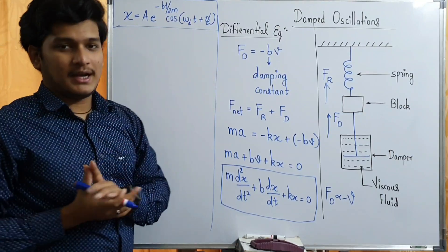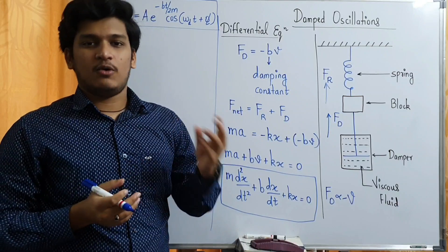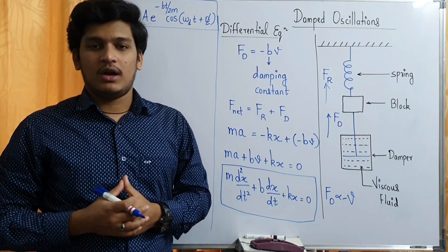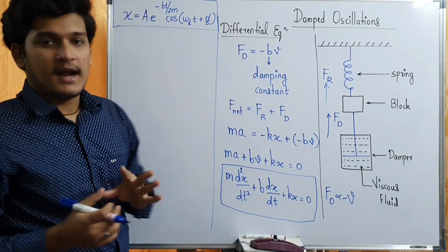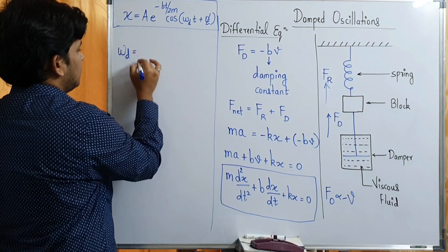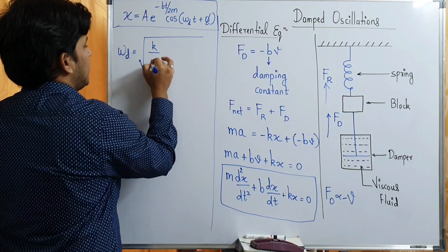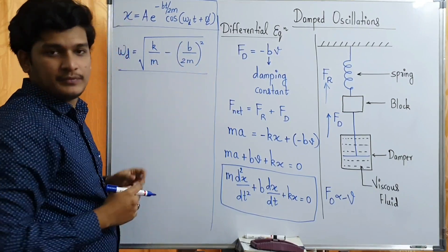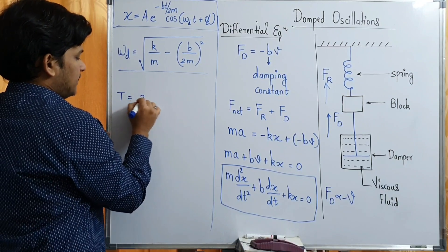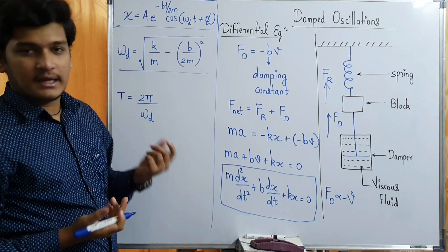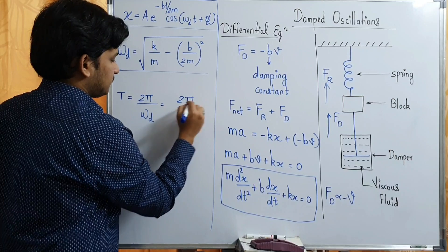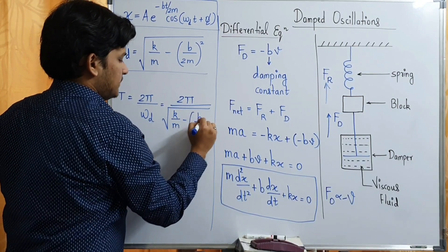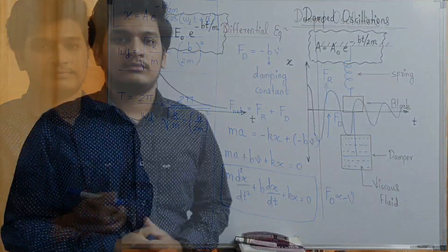Here omega d is the damped frequency. Jaise omega tha aapna angular frequency woh free oscillations ke liye, but yahan damped oscillations hain to us case mein jo frequency hogi usko hum log damped frequency kehte hai, which is omega d. Uska formula hai: ωd = √(k/m − (b/2m)²). This is the formula for omega d. Aur agar apne ko time period find karna hai, so time period is 2π by omega d, which will be 2π divided by √(k/m − (b/2m)²).